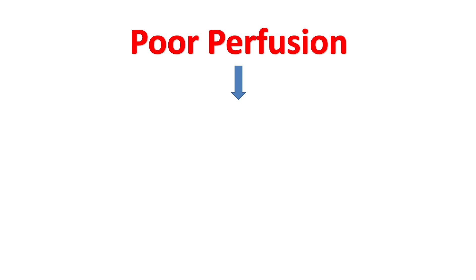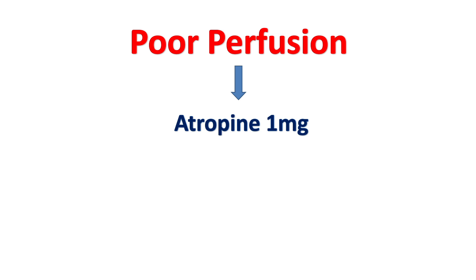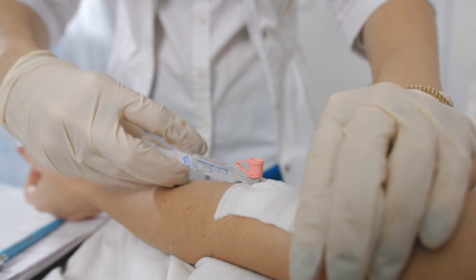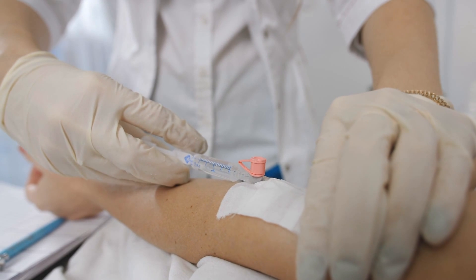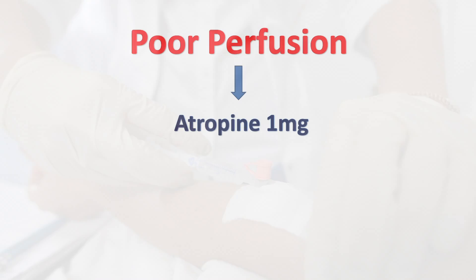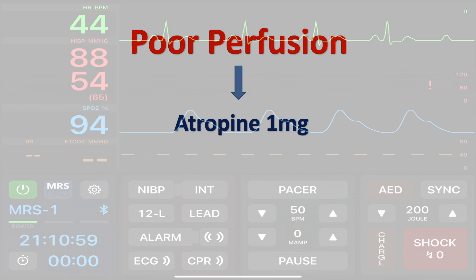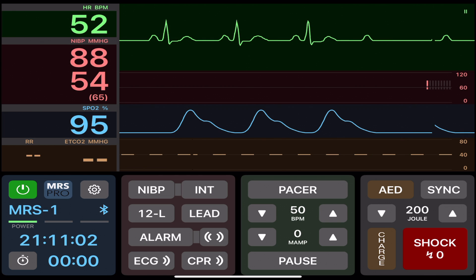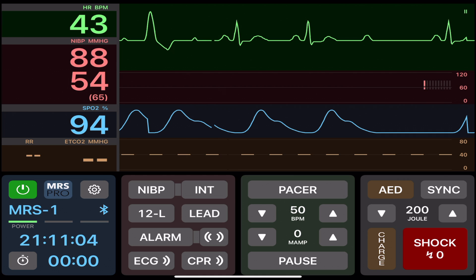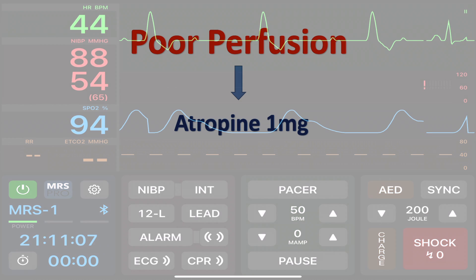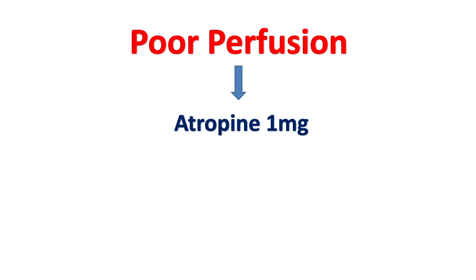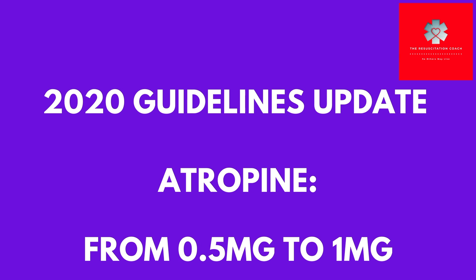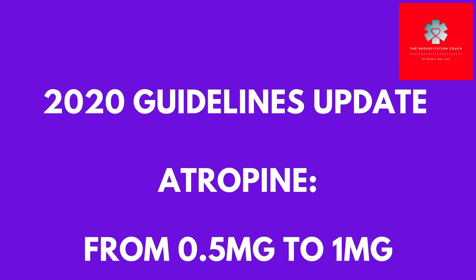If the patient has poor perfusion, administer atropine 1 mg. Classified as an anticholinergic drug, atropine is effective for the treatment of certain types of Bradycardia. Atropine typically will not work for 2nd degree block type 2 or 3rd degree blocks — your high degree blocks. Please also note that the dose of atropine has been updated in the 2020 American Heart Association guidelines from 0.5 mg to 1 mg.